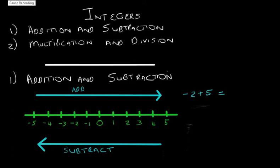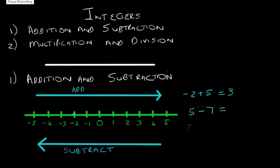Let's have a look at how the number line works. When we add on the number line we move towards the right, and when we subtract we move towards the left. So if I say minus 2 plus 5, we'll start at negative 2 and add 5. We see that minus 2 plus 5 is equal to 3. Now when we subtract, we say 5 minus 7, and we move towards the left. We start at 5 and we move 7 places to the left, so we see that 5 minus 7 is minus 2.